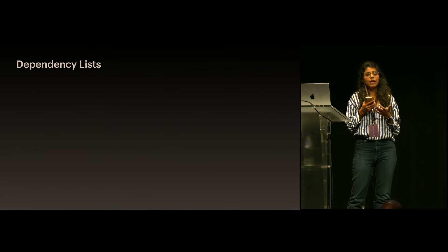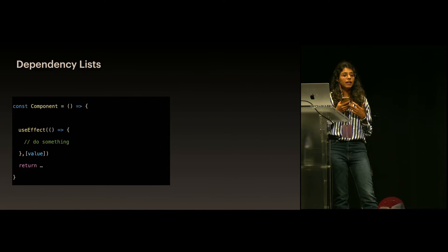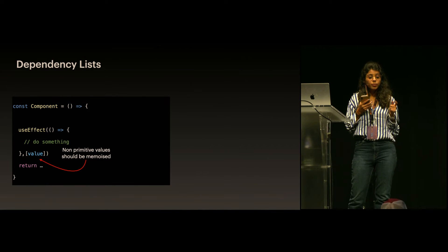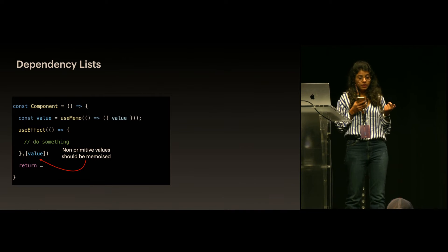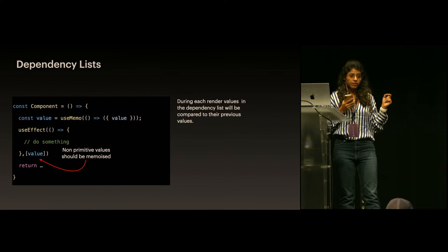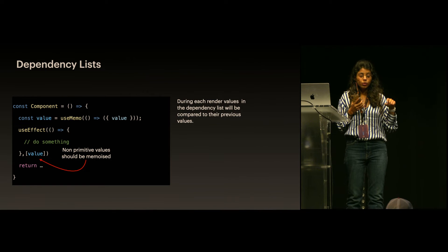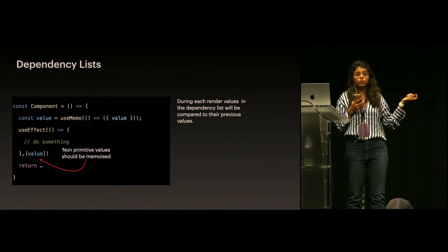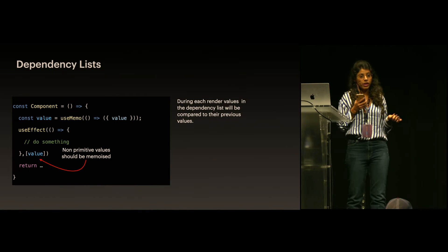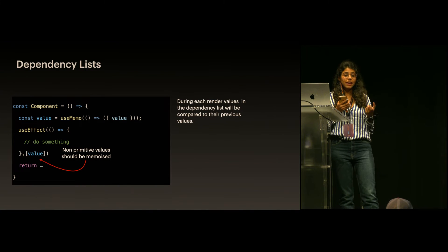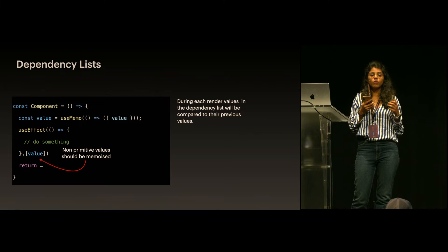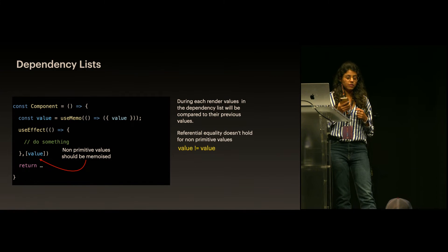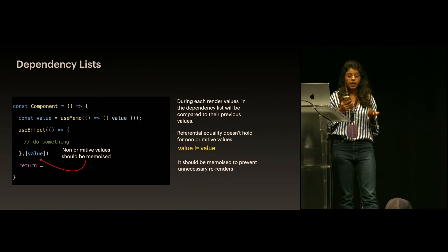Another use case is in dependency lists. If a component's useEffect dependency array contains a non-primitive value, it should be memoized. During every render, React checks the value from its previous render. If it's non-primitive and not memoized, this comparison will always result in false. So whenever you pass any non-primitive value in any dependency array of useEffect, useCallback, or useMemo, make sure you memoize that value.